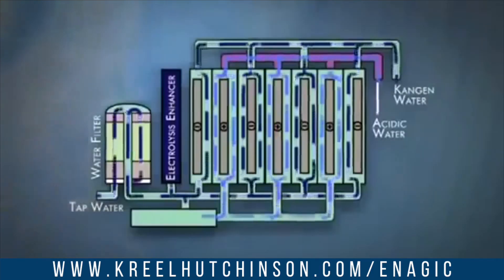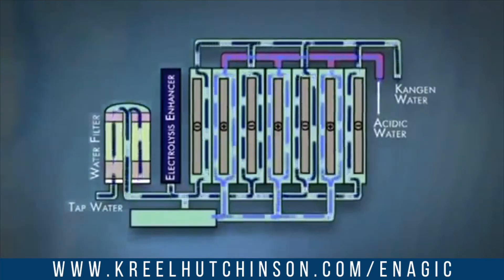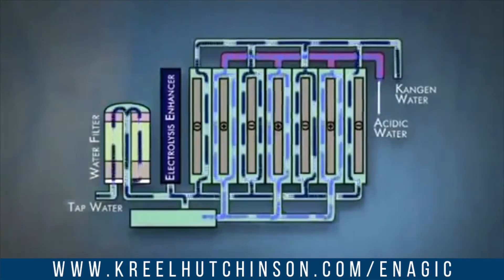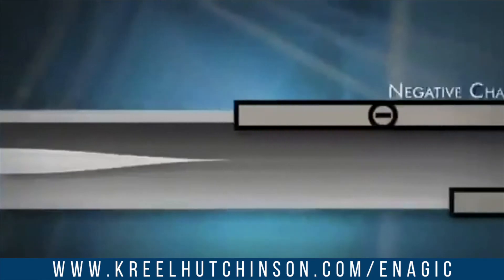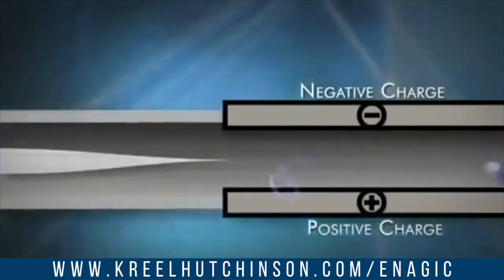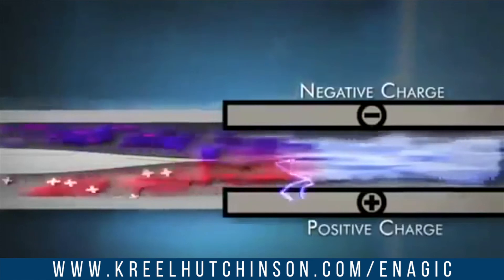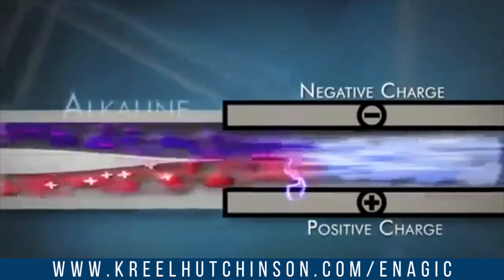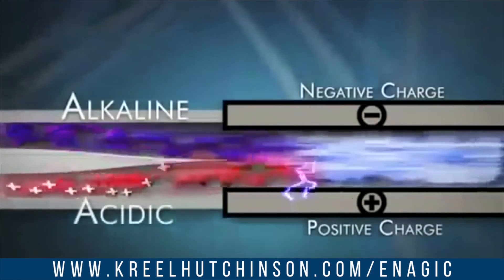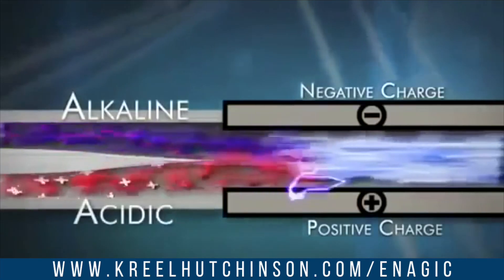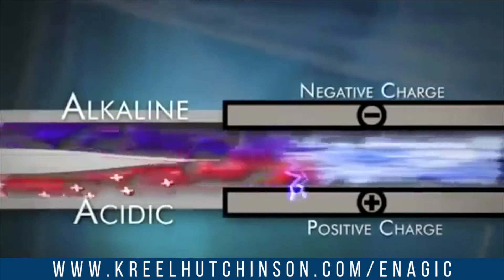As the water passes over the plates, the minerals in the water are separated into two streams — one alkaline and one acidic. The more plate surface area and the more power you can apply to the plates, the better the separation and the better the quality of the ionized water. Some metals are better electrical conductors than others.